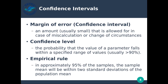First, some terminology. We say margin of error — that's our confidence interval — an amount, usually very small, that's allowed for a case of miscalculation or a change of circumstances. So we have an interval from whatever value we've calculated. Let's say we have our point estimate, the mean, and we accept a little bit of error to the left and to the right. We allow a little bit of error into our calculation because our calculation is not going to be perfect — there's going to be a little bit of error any time you measure something.